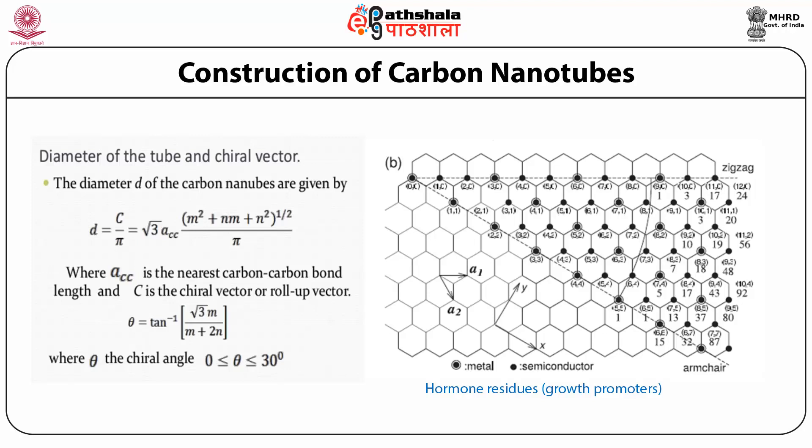If we take the chiral vector (8,0) and match the head of the vector with the tail as a circumference, the tube obtained is known as the (8,0) tube. Similarly, for the (5,5) vector, matching head to tail gives the (5,5) nanotube. The chiral vector C and the angle theta between them are two important parameters that define the diameter and other properties. A1 and A2 are the two unit vectors based on the carbon-carbon bond distance.